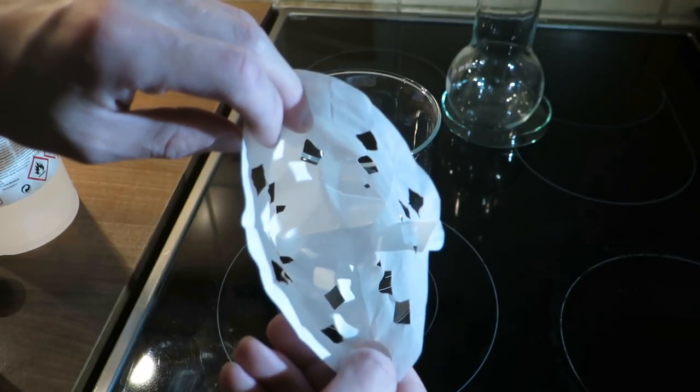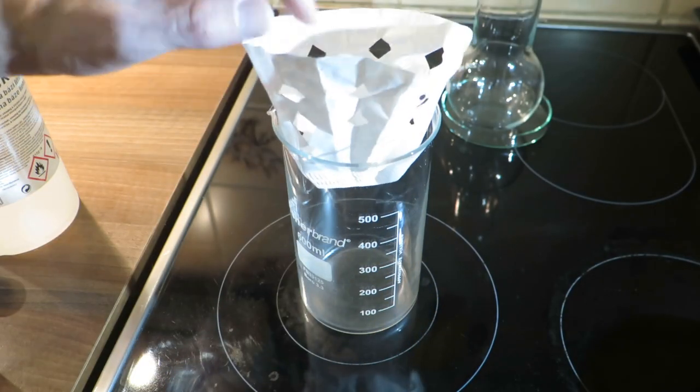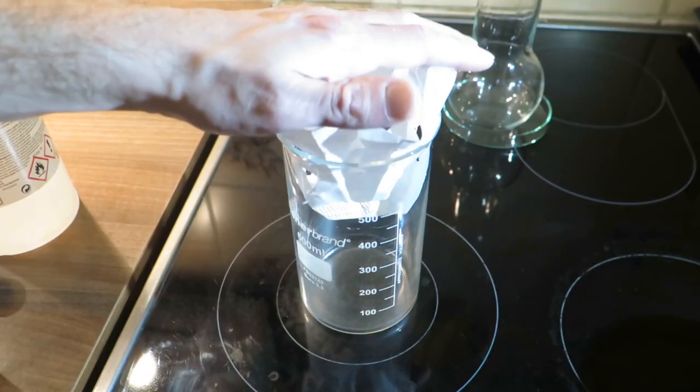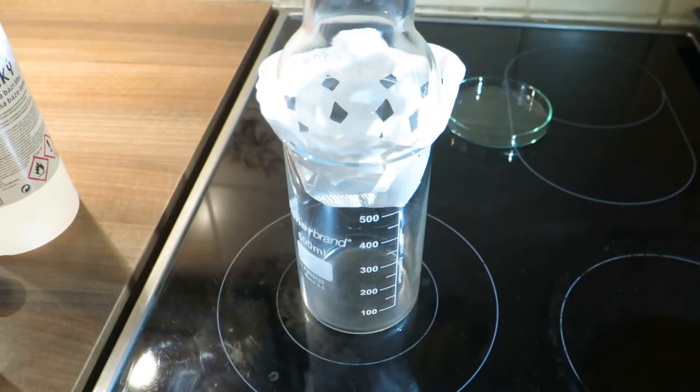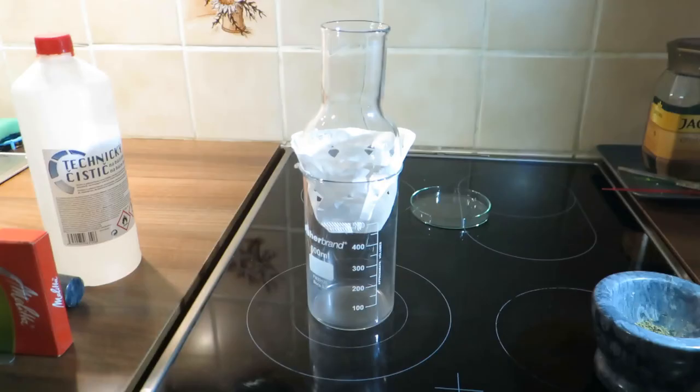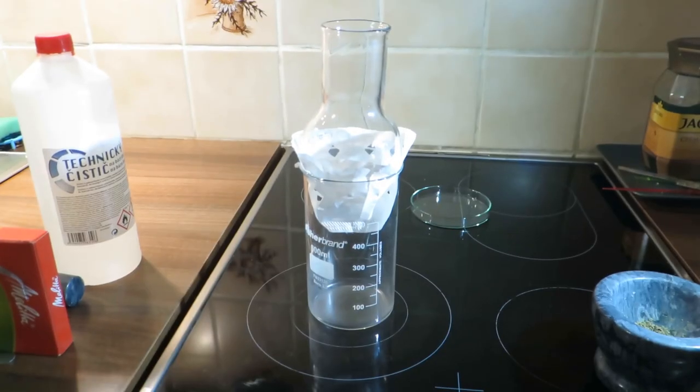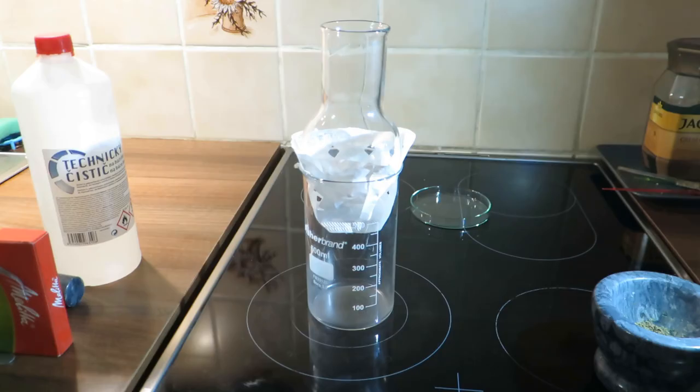This is just basic filter paper that I modified to allow vapor to pass through it. Of course it has to be compatible with your solvent. On top of that you can place a container that you will fill with cold water. Ideally this should be a glass container, but in the past I have used even polypropylene plastic cups.